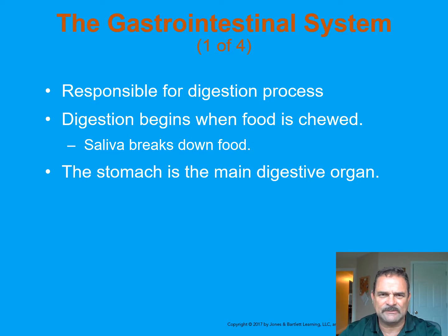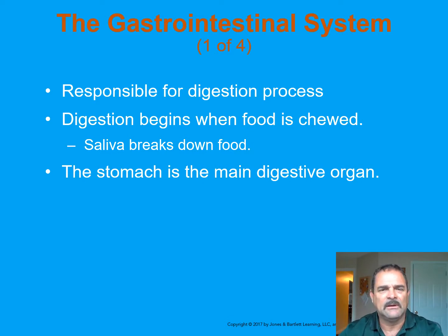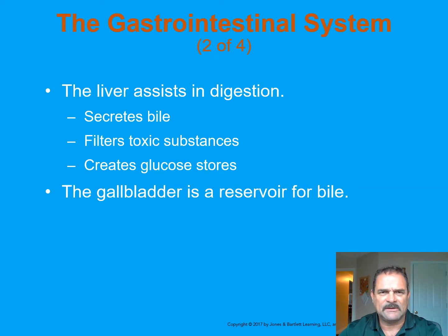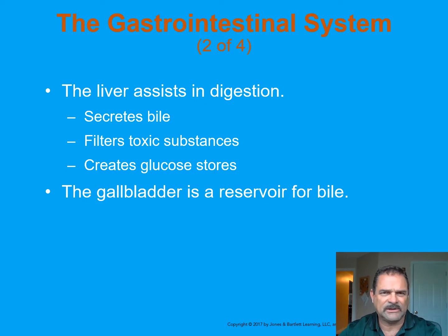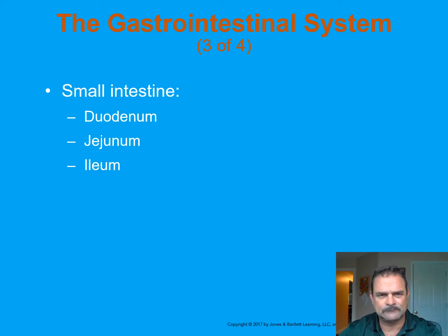The gastrointestinal system is responsible for the digestion process. Digestion begins when food is put into the mouth and chewed — that is the act of mastication. The stomach is the main organ of the digestive system. Gastric juices break down food within the stomach so it can be processed into the intestine and we can absorb all the nutrients we need. The liver aids digestion, secretes bile, filters toxic substances, creates glucose stores, produces substances necessary for blood clotting, and supports immune function. The gallbladder is a reservoir for bile.